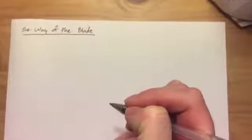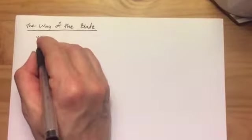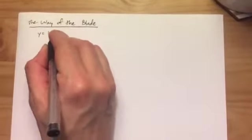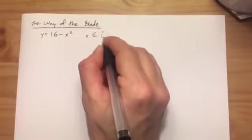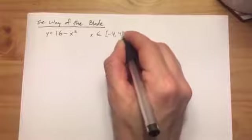Okay, this is the way of the blade. This is the blade problem. In this example, we're given a parabola with equation 16 minus x squared, and x is an element of negative 4 to 4.